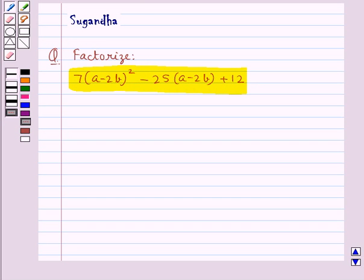Now let's move on to the solution. We need to factorize 7(a-2b)² - 25(a-2b) + 12.